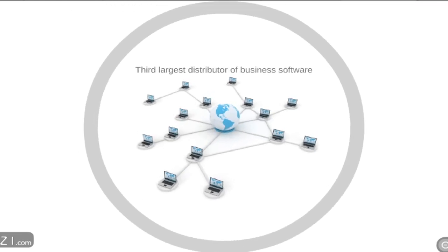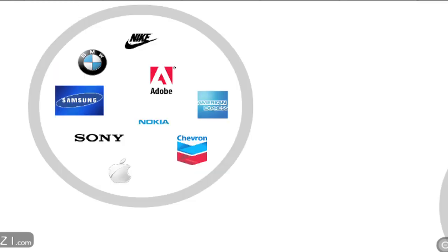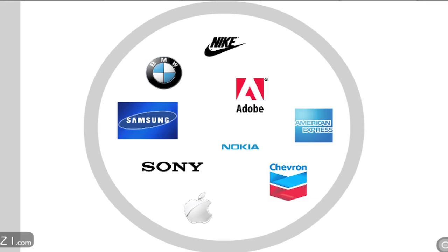After more than 30 years in existence, SAP has become the third largest distributor of business software. They offer a range of solutions modeled after business processes in many industries. Looking at a snapshot of companies that implement SAP solutions, you can recognize names like Samsung, Adobe, American Express, Nokia, Sony, Apple, Chevron, Nike, and BMW. As of 2008, SAP had about 41,000 customers in about 121 countries.